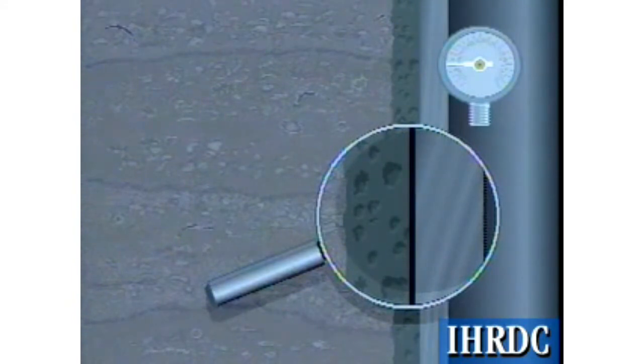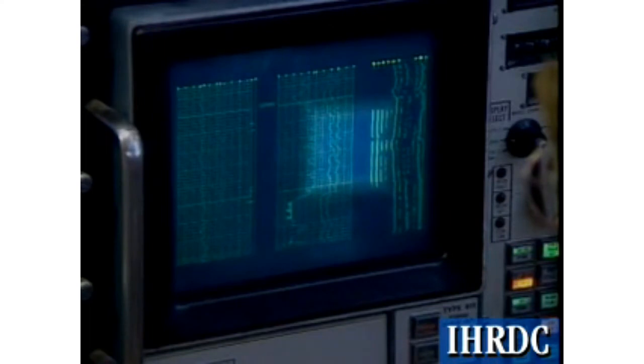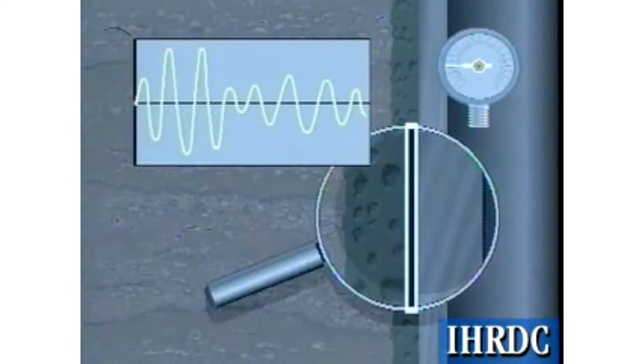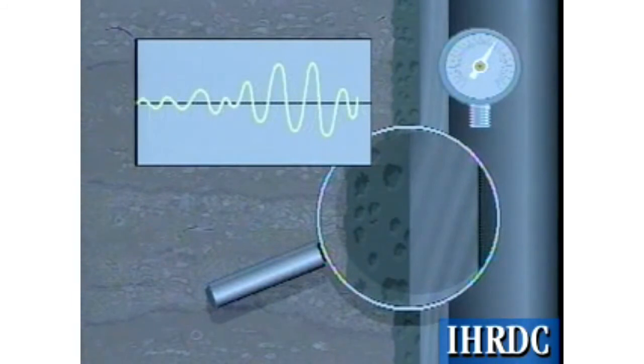Even though this microannulus does not permit hydraulic communication, the cement cannot maintain the coupling to the pipe required to attenuate the acoustic signal. As a result, the recorded amplitude will indicate a poor bond. However, during logging, if the internal pipe pressure is increased above the curing pressure, the microannulus will be closed, and an interpretable log will result.